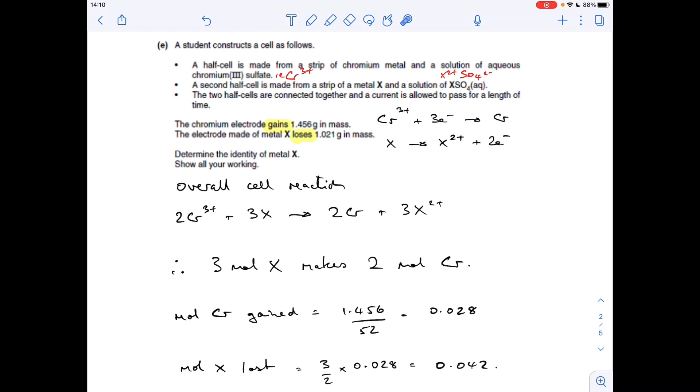From that, we can get the overall cell reaction. We need to get the electrons to cancel, so we multiply this one by 2 and this one by 3. The whole point in deriving the overall cell reaction is because you can then say that the ratio between X to Cr is 3 to 2.